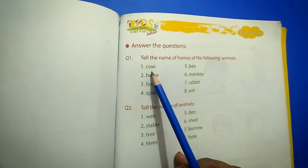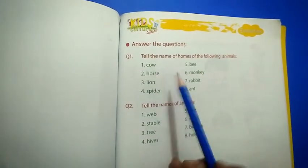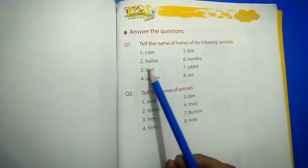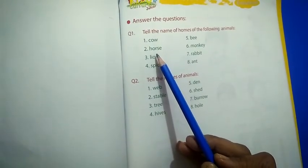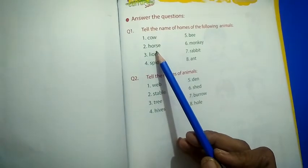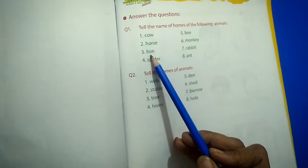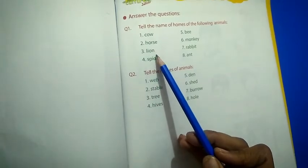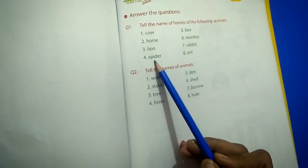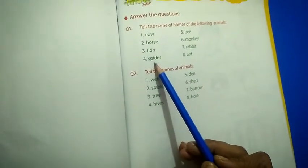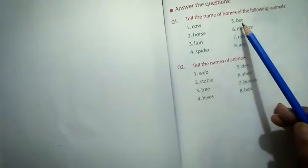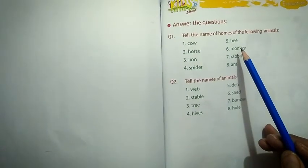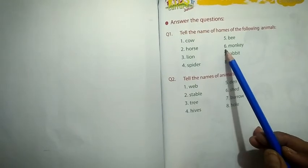Cow lives in shed. Good, cow lives in shed. Number 2: Horse. Horse lives in stable. Stable. Good. Number 3: Lion. Lion lived in den. Den. Very good. Number 4: Spider. Spider lives in a web. Spider lives in a web. Number 5: Bee. Bee lives in a hive.